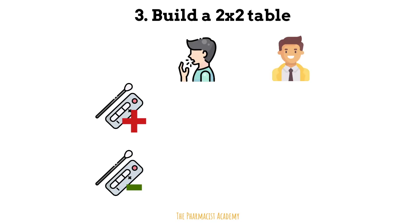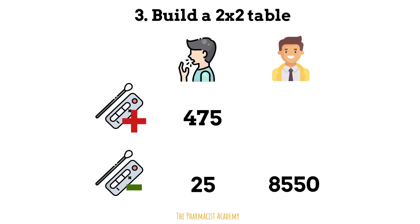There were 475 people who had COVID and the test came out positive — true positives. 25 people who have COVID but the test came out negative — false negatives. There were 8,550 people without the disease and the test came out negative — true negatives. And 950 people without the disease but the test resulted positive — false positives.